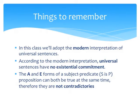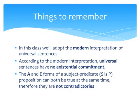So, these are the things you should remember. First, that in this class we'll adopt the modern interpretation of universal sentences. Second, that according to the modern interpretation, universal sentences have no existential commitment. And so, as a consequence, the A and E forms of a subject-predicate proposition can both be true at the same time — therefore, they are not contradictories.